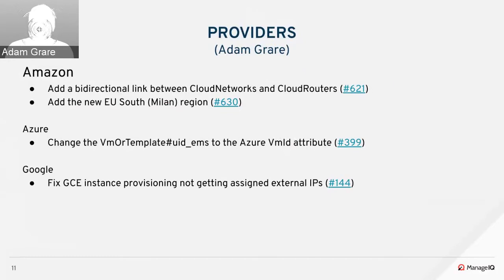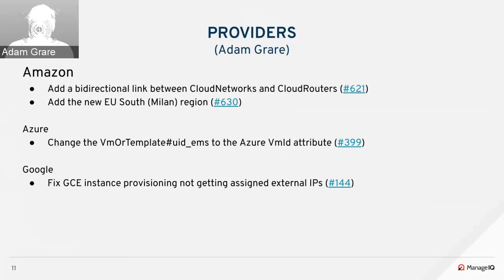For Google, we fixed instance provisioning. Ever since Google added the network tier property of a network as a required attribute, provisioned instances weren't getting an external IP address automatically assigned. We now automatically select a network tier so that it gets assigned automatically.